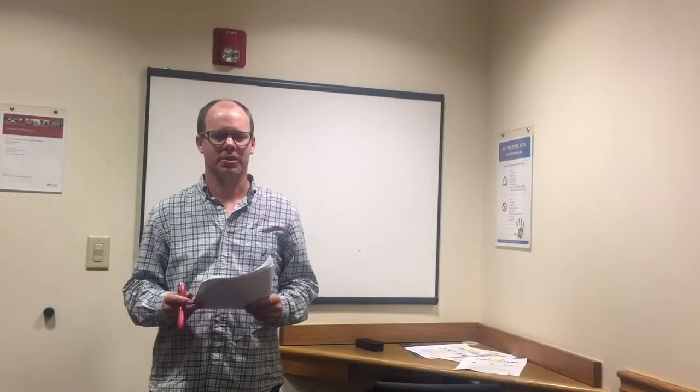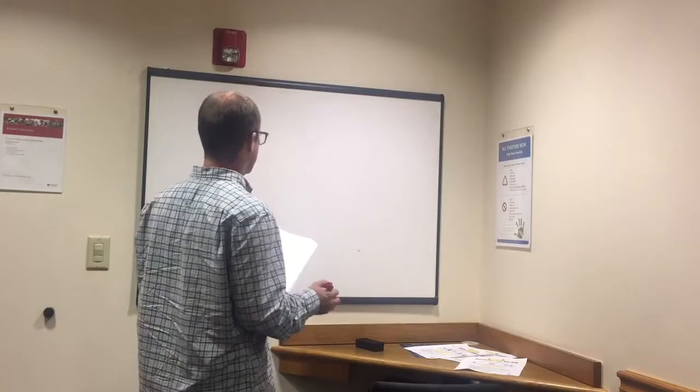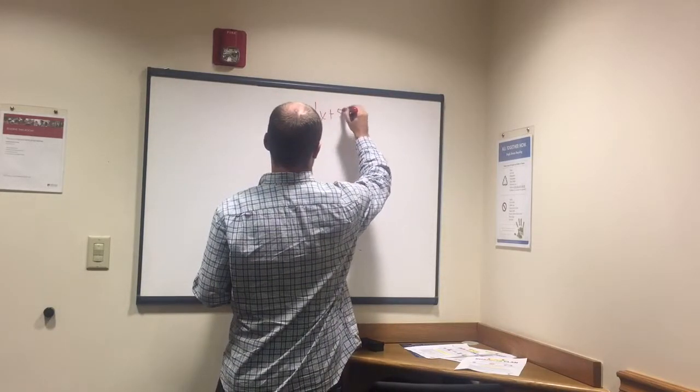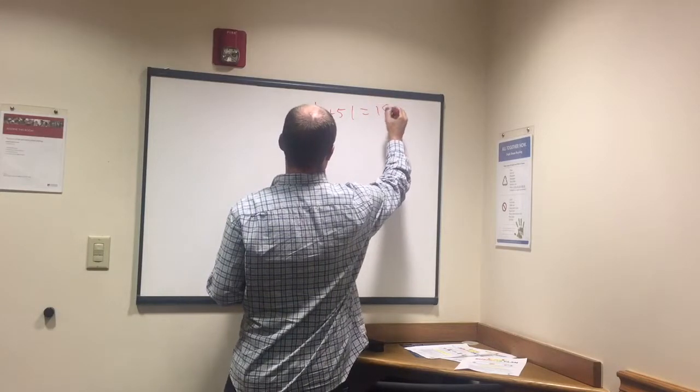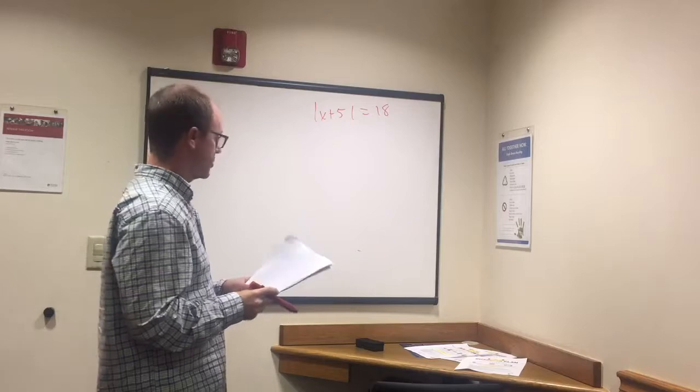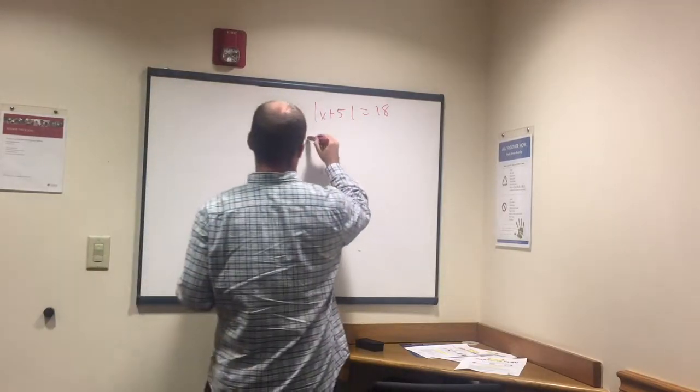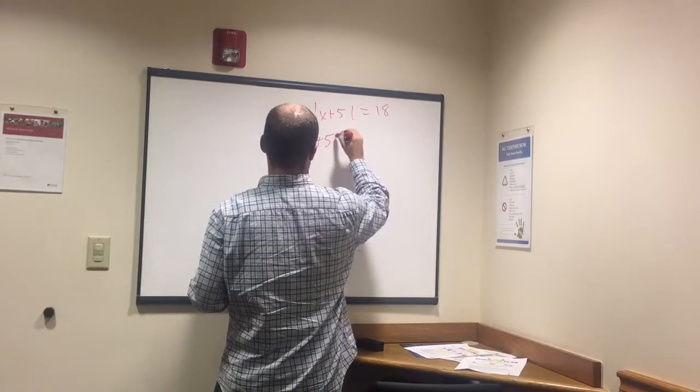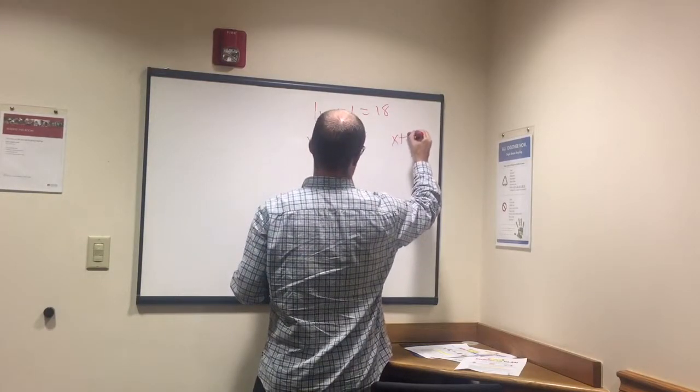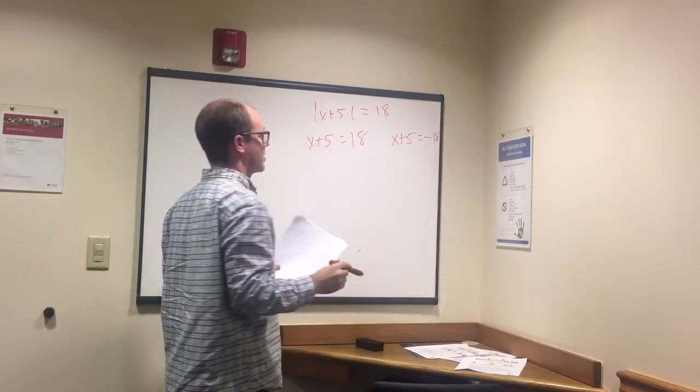Let's take a look at some absolute value questions. With absolute value we want to set up two equations. Absolute value of x plus 5 equals 18. What you want to do is set it up so you have x plus 5 equals 18 and x plus 5 equals negative 18.